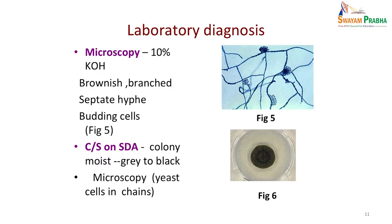When you do microscopy under 10% KOH you will see brownish branched septate hyphae along with budding cells, which is a very typical appearance. When you grow it on culture — Sabouraud dextrose agar — you get brown to grey to black moist colonies. On microscopy you see yeast cells in chains. This picture of brownish discolored patches with this microscopy and culture result leads to a diagnosis of tinea nigra, and the treatment is similar to tinea versicolor.